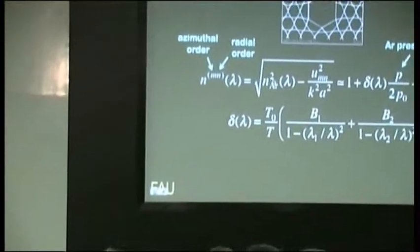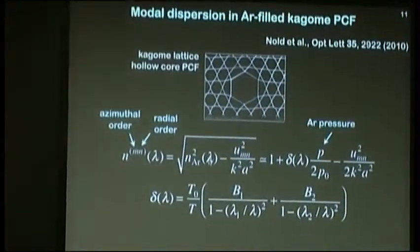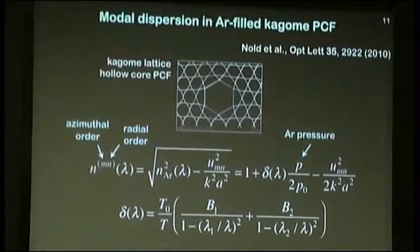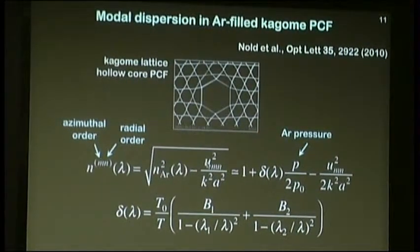You can work out the refractive index of the guided mode in the core from a simple approach where the transverse wave vector of the mode in the core has to be quantized by the diameter of the core. And having established that value, you can work out the refractive index of the guided mode. This depends on the refractive index in the core itself, where we're going to put argon gas. You need the index of argon squared minus a term which includes the wavelength, the radius of the core, and the zero of a Bessel function.